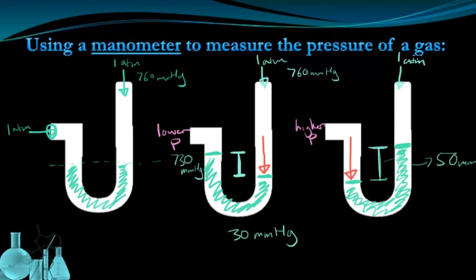So 760 is the standard pressure coming in. That means this high pressure area over here must be 810 millimeters of mercury. 50 millimeters higher than the standard 760 on this side.